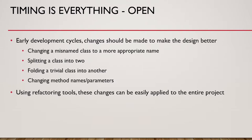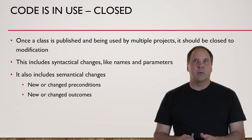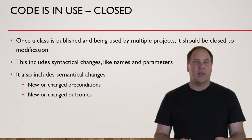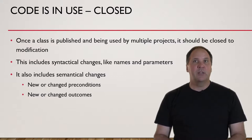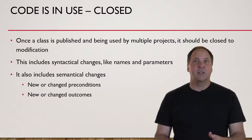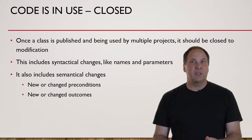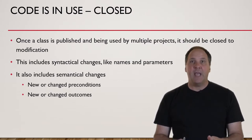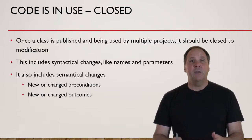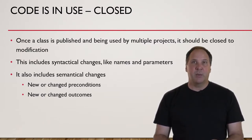Once your code is in use, we don't want to make changes to it anymore, especially when that usage goes beyond your project. When other project teams are using your code and your classes, we don't want to make changes that would break their code. Certain changes are allowed while others are not. We don't want to change the name of the class, its inheritance, or the names of any methods. However, we can extend the class — we can add more methods and even add more interfaces for the class to implement.